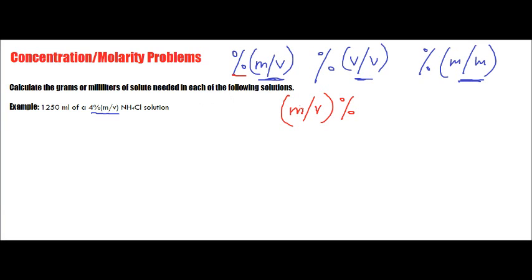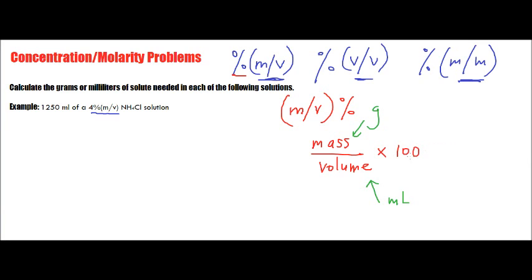What we have here is M slash V, which really means mass above volume. The mass is typically in grams, and volume is typically in milliliters. And this percent symbol — as I like to state with my students — per cent in French means per 100. So we have mass-volume percent, meaning mass on top of volume, multiplied by 100.